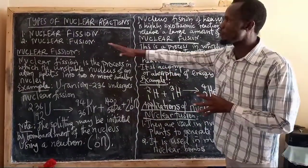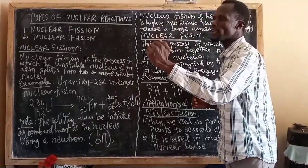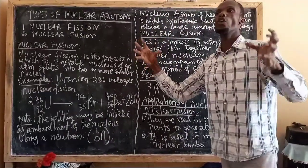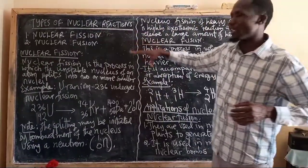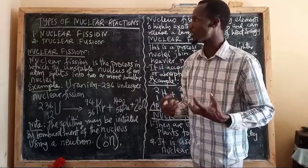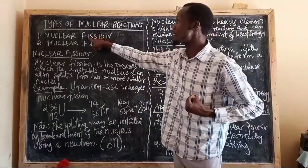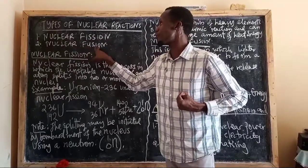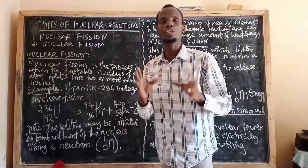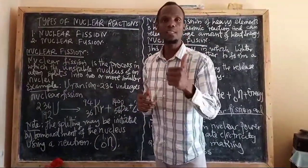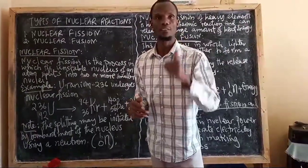So this is all about nuclear fission and nuclear fusion. To differentiate them: one is all about breaking down and the other is all about joining together. Whenever you are discussing nuclear reactions, you have to know we have two of them — nuclear fission and nuclear fusion — and there is a difference as explained. Thank you very much for watching, and please subscribe for more learning videos.